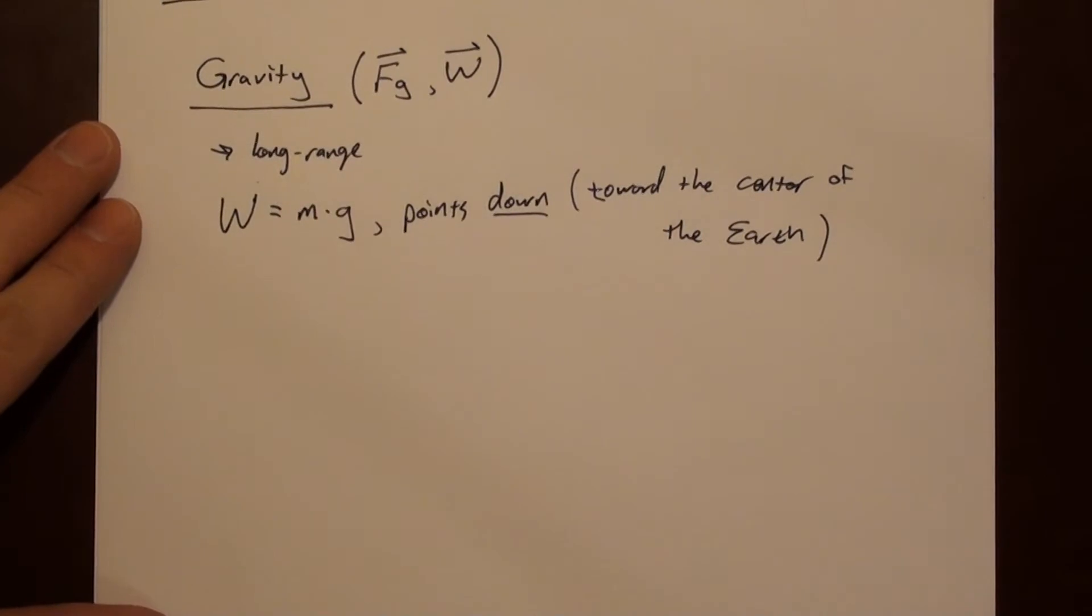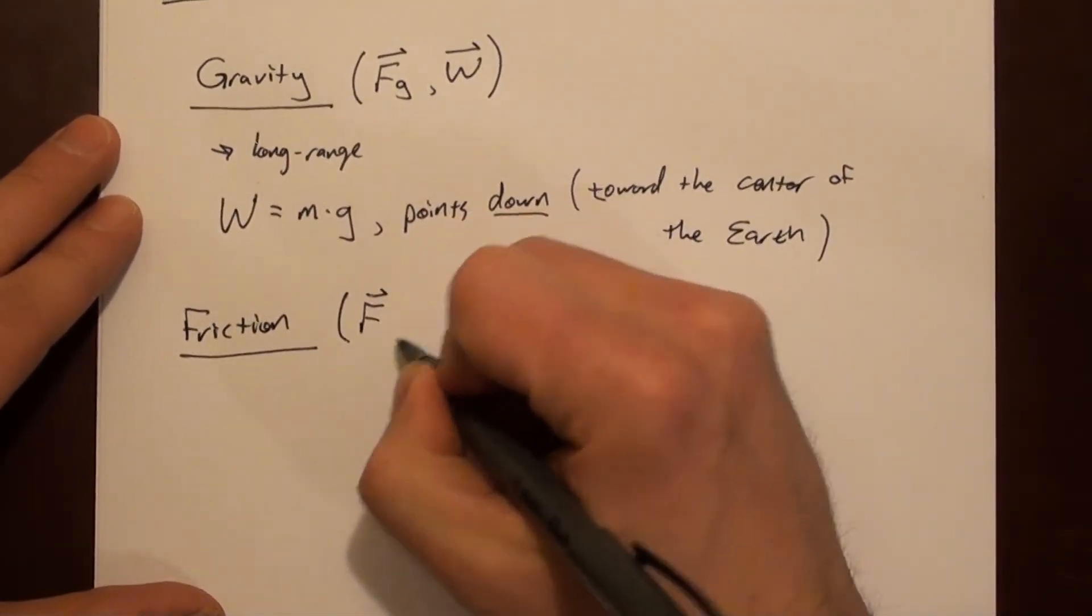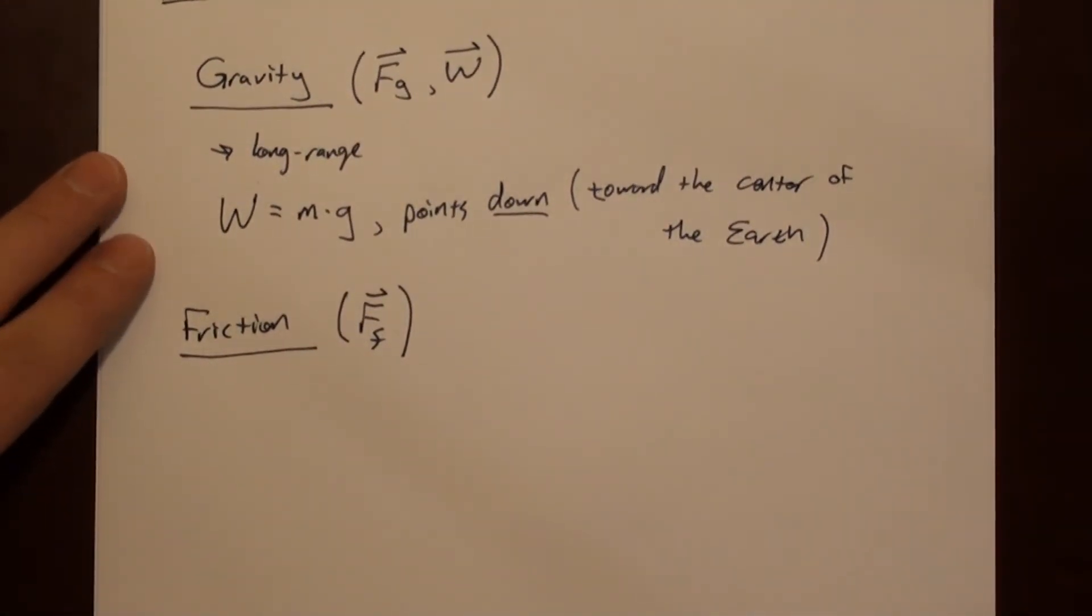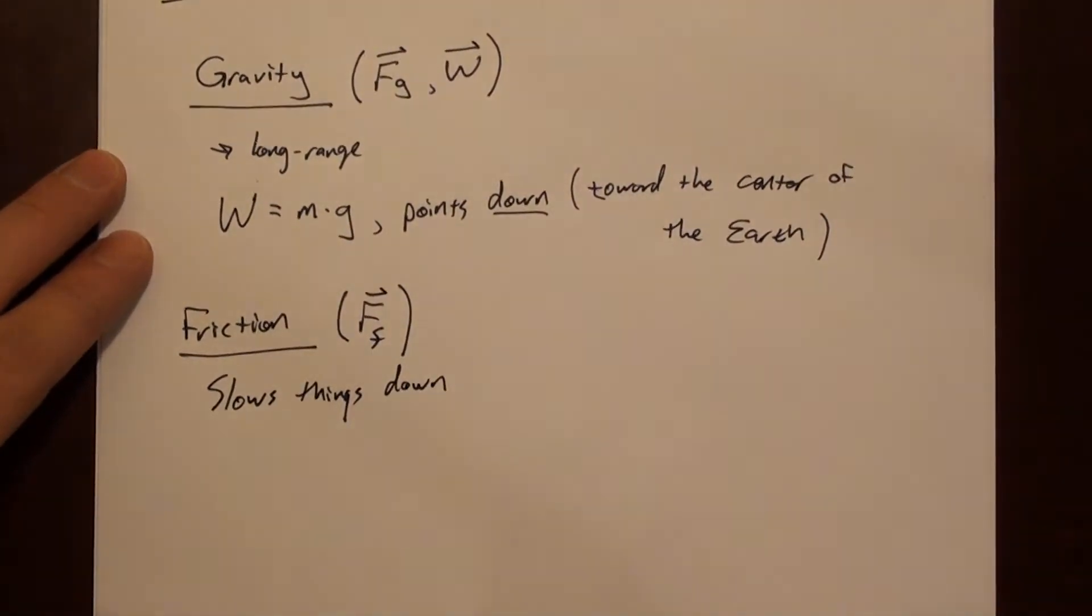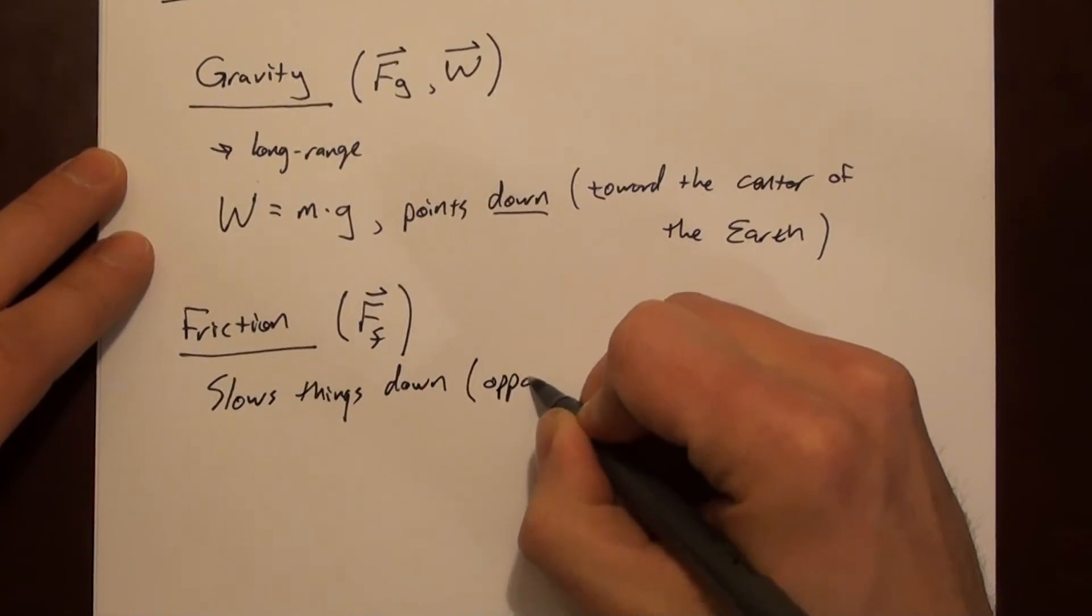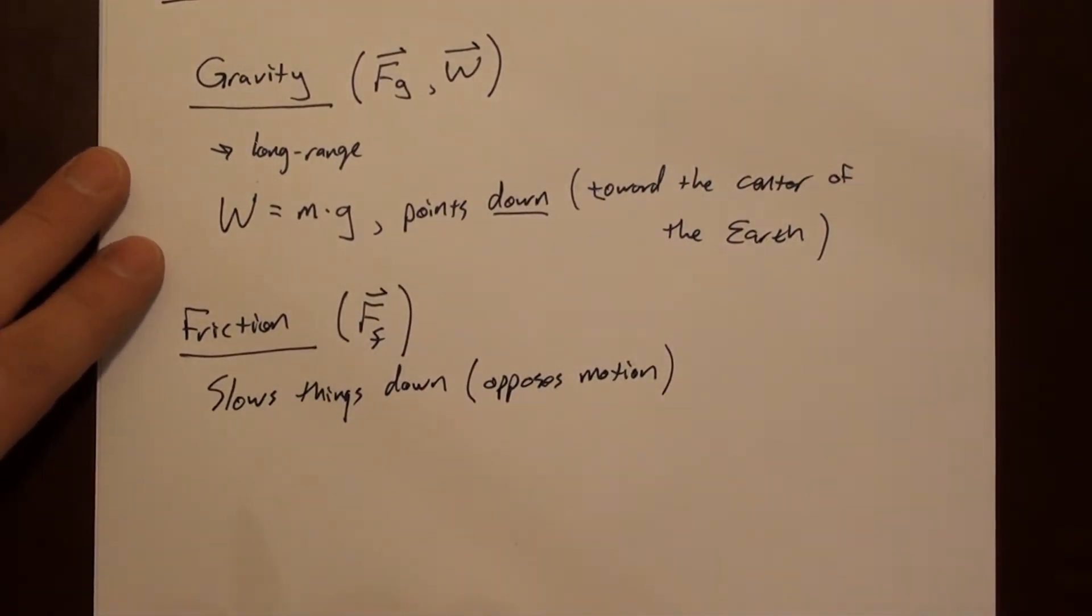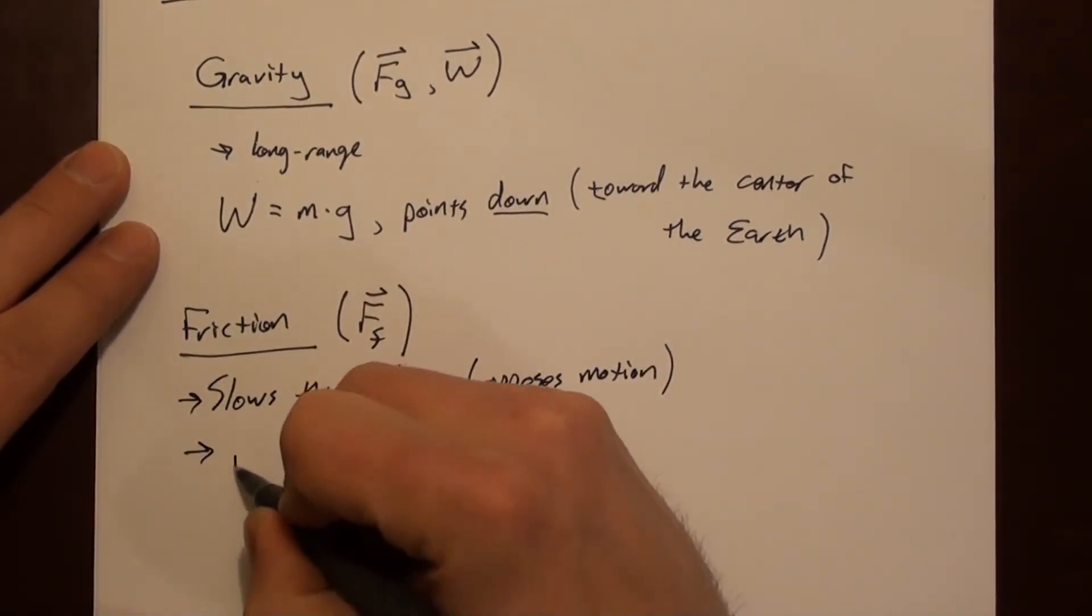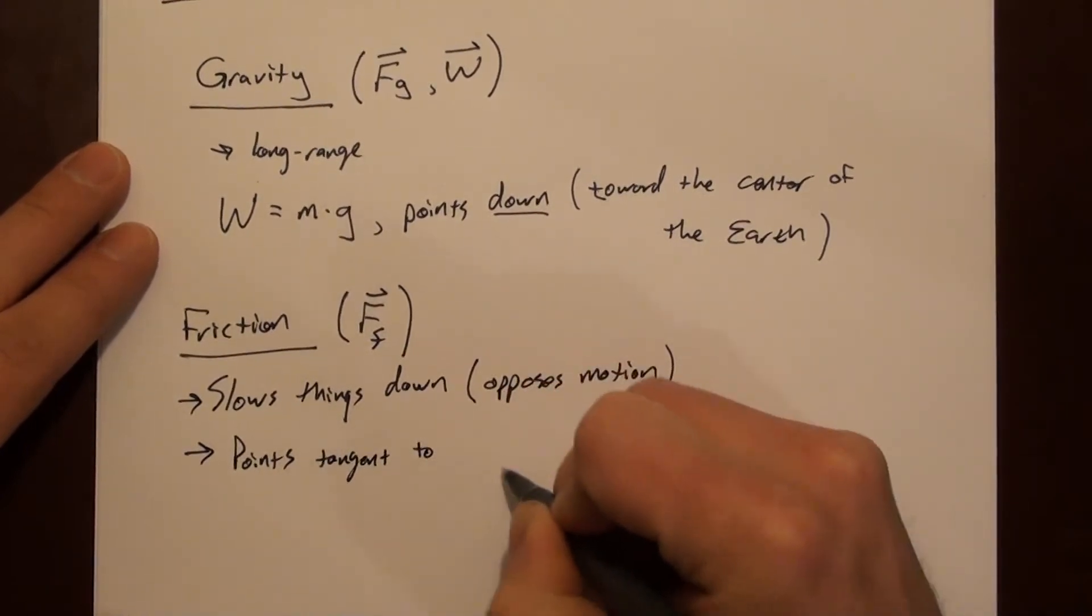Another force that we will see commonly is friction. Often I'll use a capital F with a subscript F. So force due to friction. Friction slows things down, typically. Another way to say that is it opposes motion, or really, it opposes change in motion. And this always points tangent to or parallel to a surface.